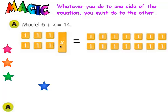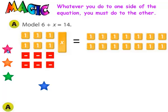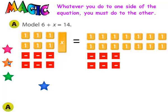I've set this problem up with algebra tiles. For me to isolate this variable x, I need to get rid of these six positive numbers. And the way to do that is to create zero pairs on that side. I can get rid of those six positives if I add six negatives. But remember the magic words — whatever you do to one side of the equation, you must do to the other. And now I can see a lot of zero pairs.